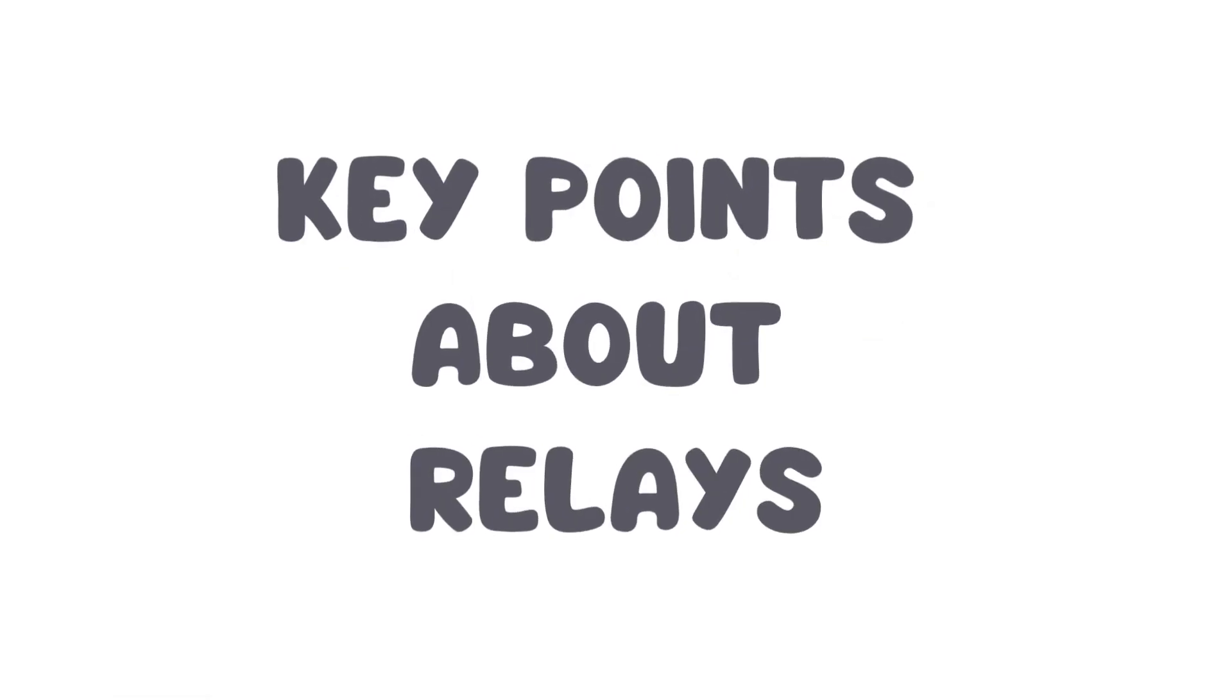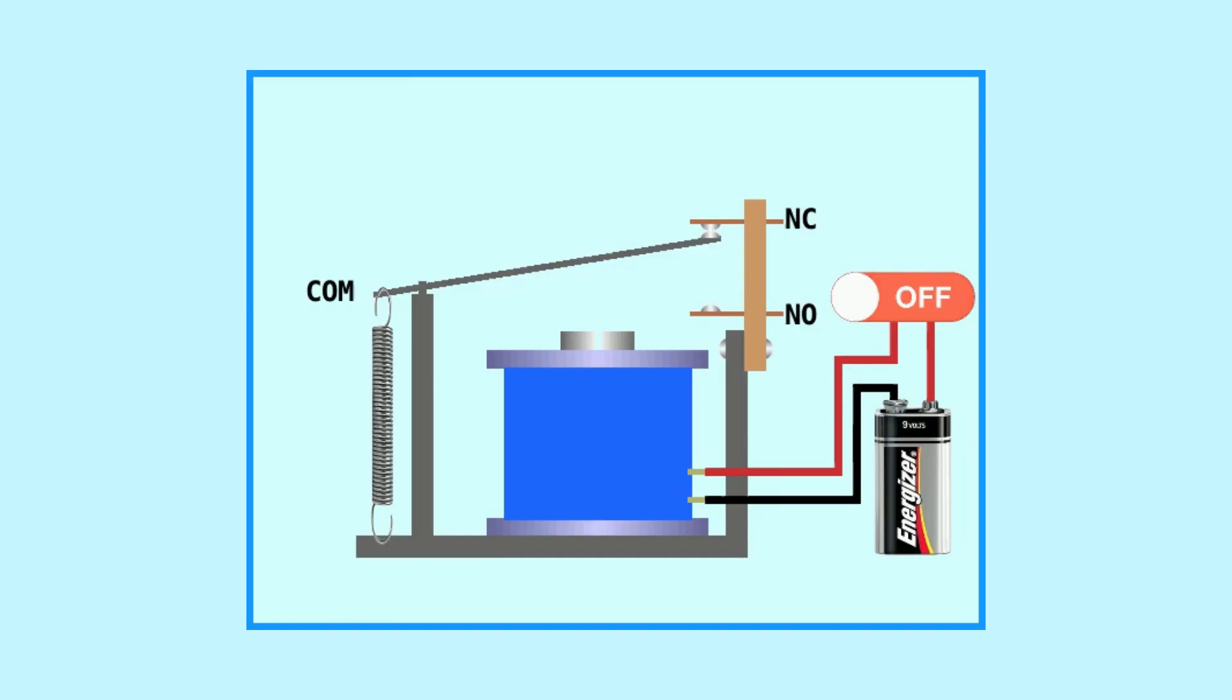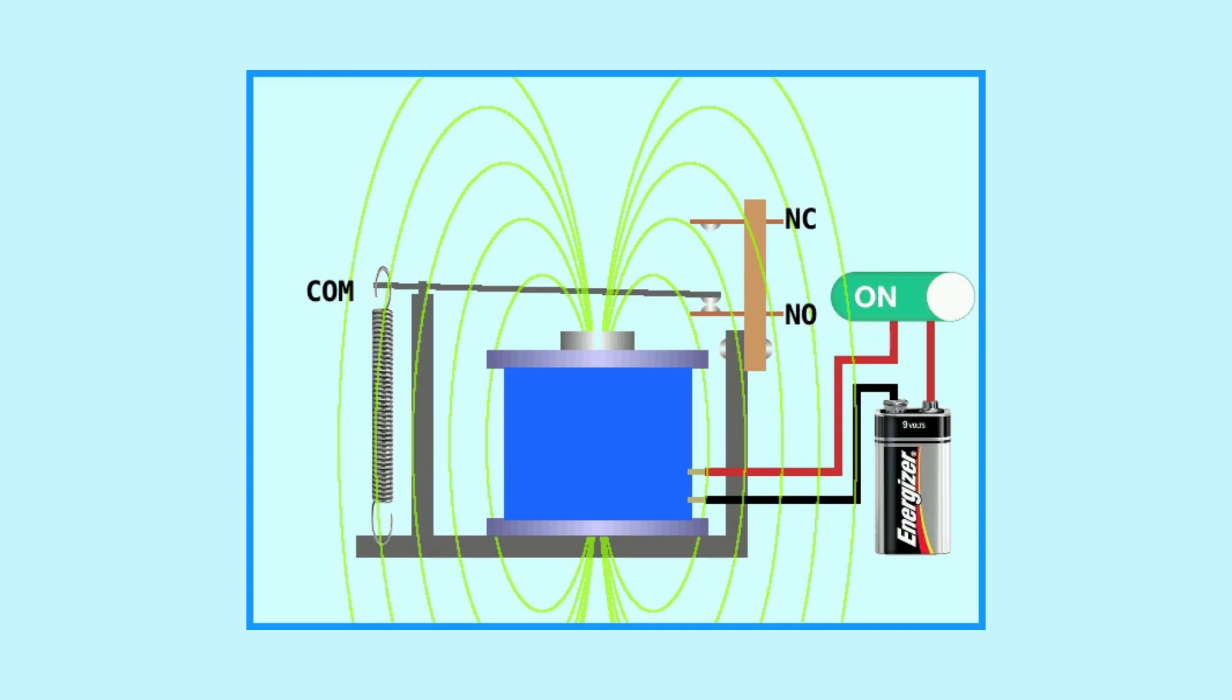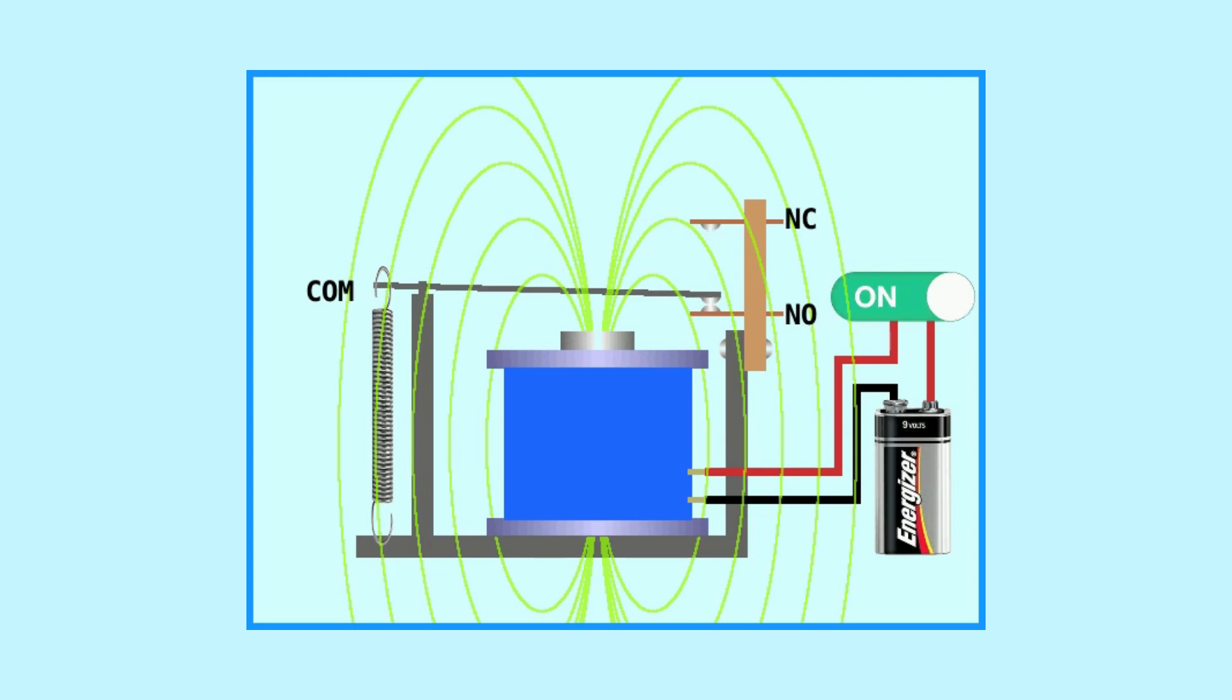Here are some key points about relays. Structure of relay: A relay typically consists of a coil, an armature, one or more sets of contacts, and a housing. The coil is an electromagnet that generates a magnetic field when an electric current passes through it. The armature is a movable part that is attracted by the magnetic field when the coil is energized.